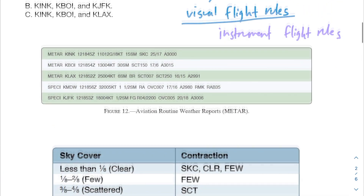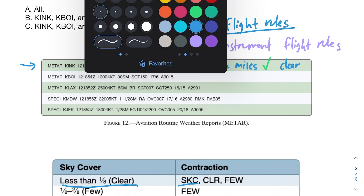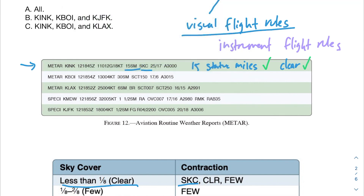Looking at the first airport, we can skip ahead to the 'SM' which stands for statute miles — this airport has a visibility of 15 statute miles, which is great. For sky cover we have SKC, which means clear. We don't have any cloud ceiling here, so you can assume there aren't many clouds. KINK is good — it has VFR weather.